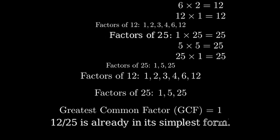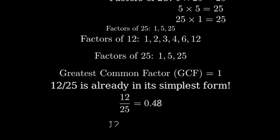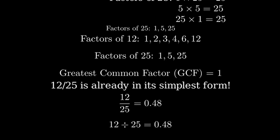Since the greatest common factor is 1, this means that 12/25 is already in its simplest form. We cannot reduce it any further. If we want to express this as a decimal, we can divide 12 by 25, which gives us 0.48.